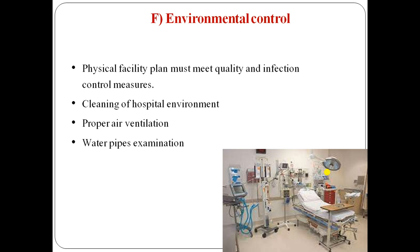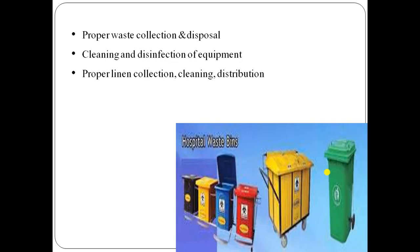For environmental control, physical facilities must meet quality and infection control measures. This includes cleaning of the hospital environment, proper air ventilation, and water pipe examination. Proper waste collection and disposal must follow color-coded bin guidelines — yellow bins, blue bins, red bins — which will be discussed further in biomedical waste management. Proper linen collection, cleaning, and distribution must also be maintained.